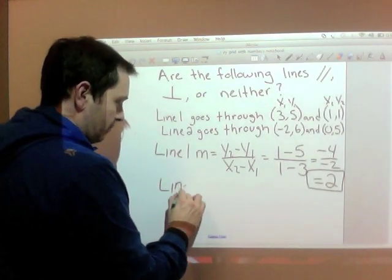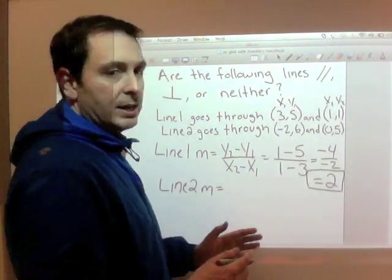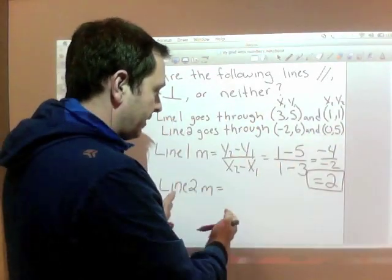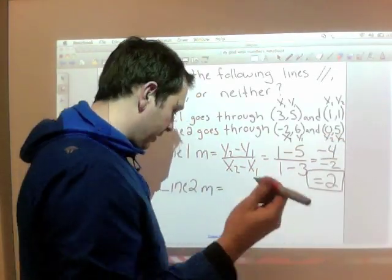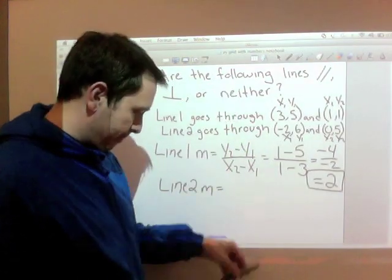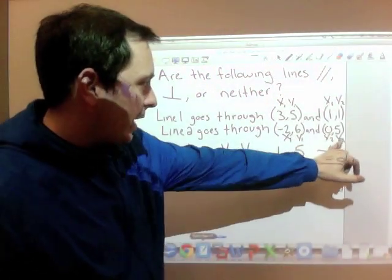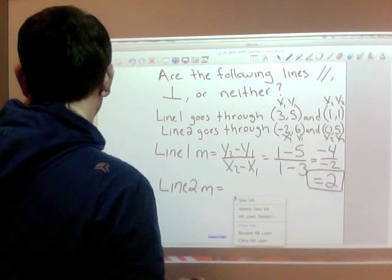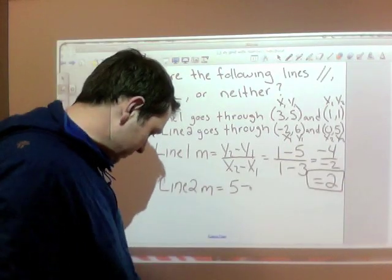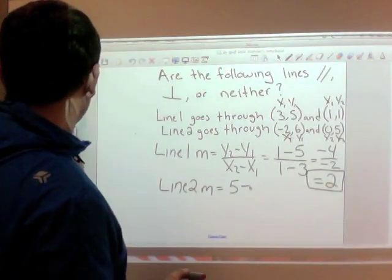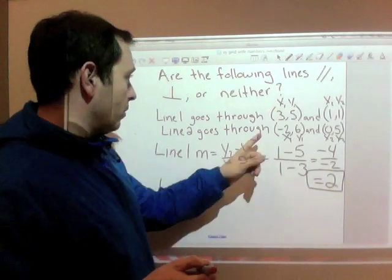Now let's look at line two. For this one, again, I have two coordinates. And even though this is point one and this is point two, I'm doing it in a different spot. So I'm still going to call this x one, y one, x two, y two. Using this formula again, y two minus y one.